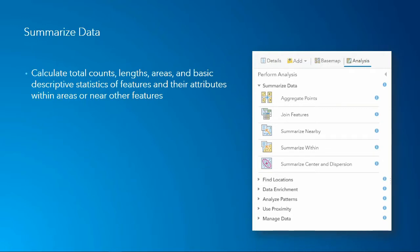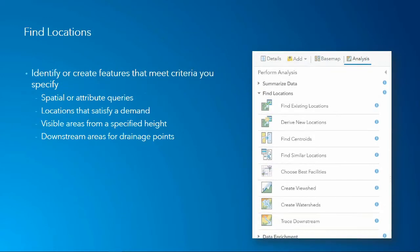The first category is Summarize Data. This is all about calculating counts, lengths, areas, and other statistics about our features and their attributes, either within an area or near some other features. An easy example is aggregating data — a very common GIS workflow — to summarize points within a polygon area. Also notice the join features tool, which is a very common process available in the Summarize Data tool set.